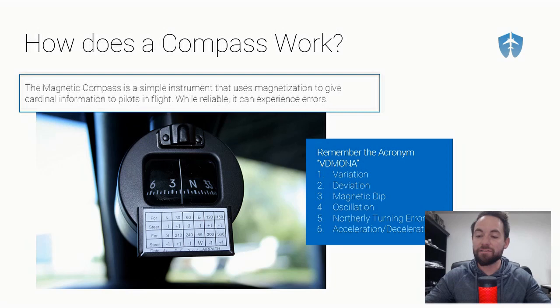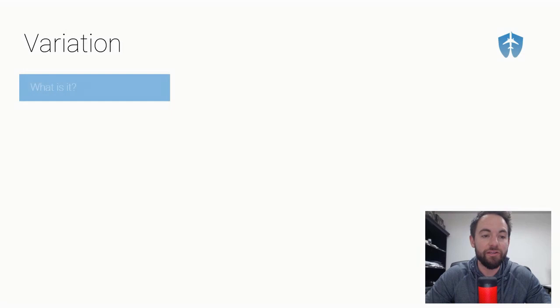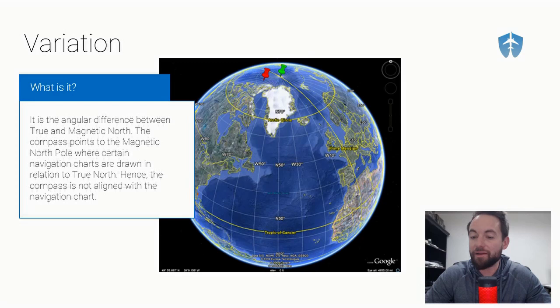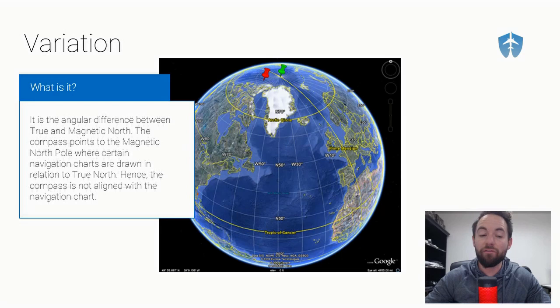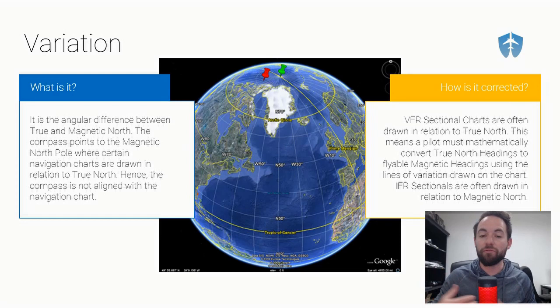VD MONA stands for: Variation, Deviation, Magnetic Dip, Oscillation, Northerly Turning Errors, and Acceleration and Deceleration Errors. First, we have Variation. Variation is the angular difference between true and magnetic north. True and magnetic north are not in the same geographical location on the planet. The compass points to magnetic north, however certain navigation charts are drawn in relation to true north, so the compass is not aligned with the navigation chart.